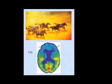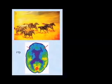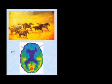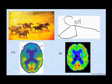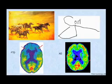Frontotemporal dementia is one of the most common presenile dementias and is quite different from Alzheimer's disease in that it presents with unusual behavioral symptoms instead of memory and spatial loss. In fact, patients with frontotemporal dementia can have excellent writing and drawing capabilities, as one can see here, while patients with Alzheimer's disease cannot even draw a simple two-dimensional shape at an early stage of the disease.